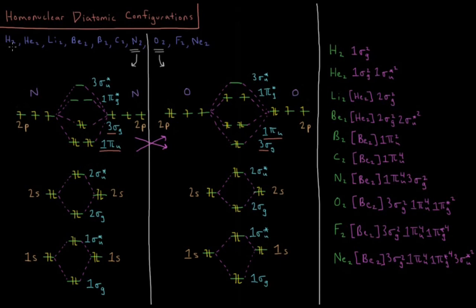The molecules that we're going to be interested in are all the way from hydrogen to neon, homonuclear diatomics: H2, helium-2, lithium-2, beryllium-2, boron, carbon, nitrogen, oxygen, fluorine, and neon.